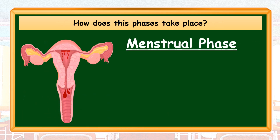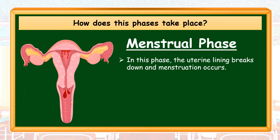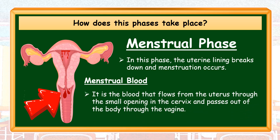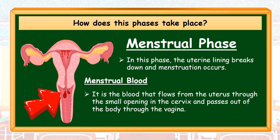Menstrual Phase: In this phase, the uterine lining breaks down and menstruation occurs. Menstrual blood is the blood that flows from the uterus through the small opening in the cervix and passes out of the body through the vagina. The first menstruation for girls when they reach puberty is called Menarche. However, if the woman stops menstruating, she has already reached her menopausal stage. This stage usually takes place between 45 to 55 years of age.